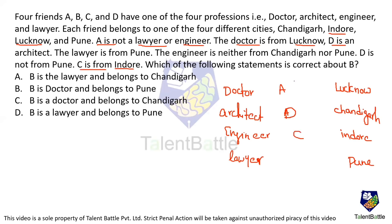B is the only one remaining, so B is the lawyer from Pune. Checking which of the following is correct about B — B is a lawyer from Pune. The answer is option D: B is a lawyer and he is from Pune.